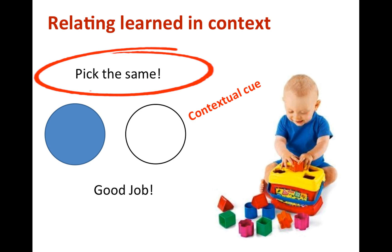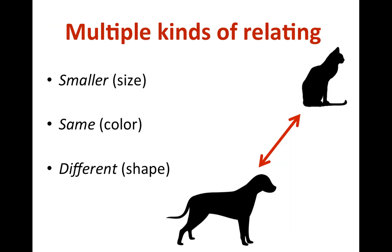Progressively, as we go through multiple learning experiences like this, we learn to respond according to an increasing number of contextual cues. There are many kinds of contextual cues. For example, when we relate this cat to this dog, we can say that the cat is smaller according to the size, the same according to the color, or different according to the shape. Note that at this point, relations are built according to intrinsic characteristics of stimuli.